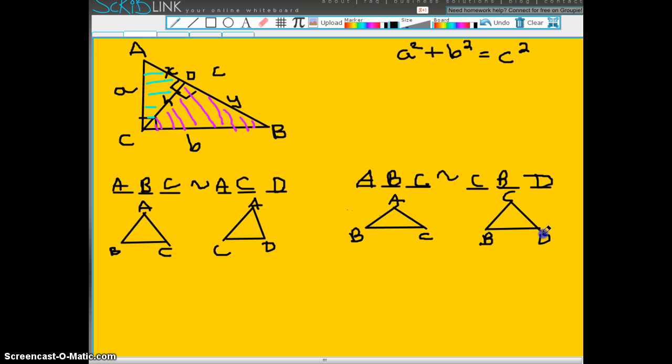Now I'm going to put in my distances. A to B is C. B to C is B. And A to C is A. Now A to C is A. C to D is H. And A to D is X. Okay, ABC. A to B is C. That's supposed to be a C. And this is B. And this is A. Similarly, C to B is B. B to D is Y. And D to C is H.